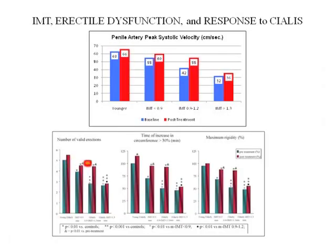Looking at the number of nocturnal erections — normal is five — the men with psychogenic ED were having the normal five. The older men with organic ED and normal IMT saw their number of erections improve. Men with mild to moderate increase in IMT improved as well. The men with an increased IMT did not improve. These physiologic markers of erectile function — time to develop erection, rigidity — all improved in response to Cialis in men without significantly increased intermediate thickness, but not in men with increased IMT.